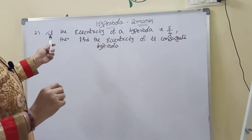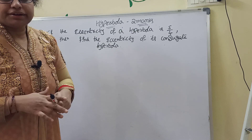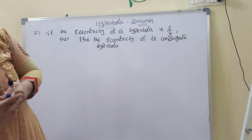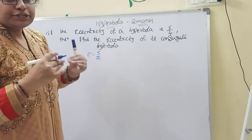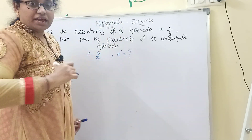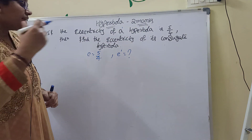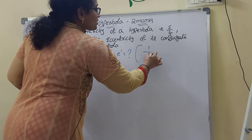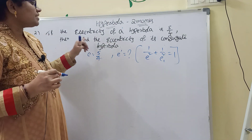Second question: if the eccentricity of a hyperbola is 5/4, find the eccentricity of its conjugate hyperbola. Here, eccentricity e is given as 5/4, and we must find the eccentricity of the conjugate hyperbola, which we call e₁.